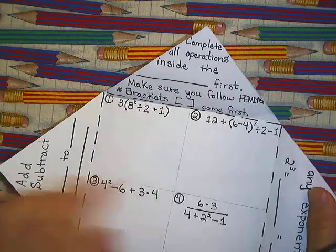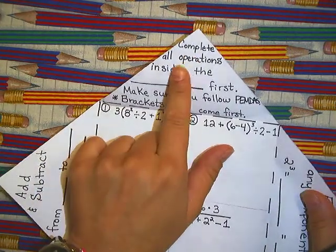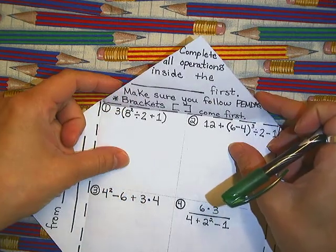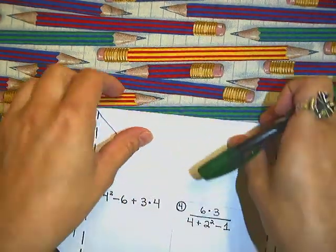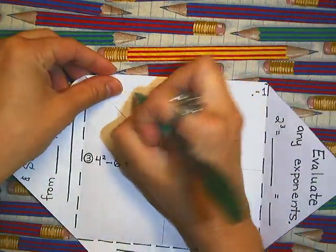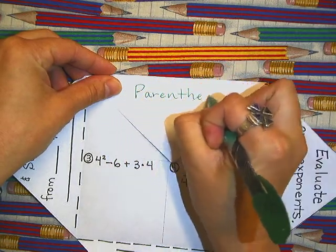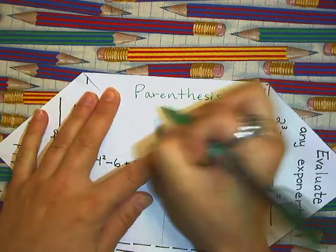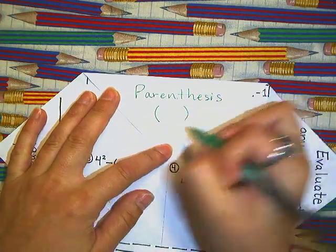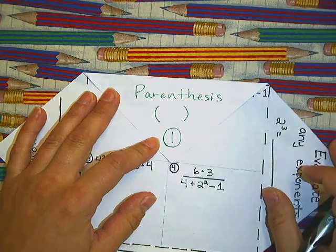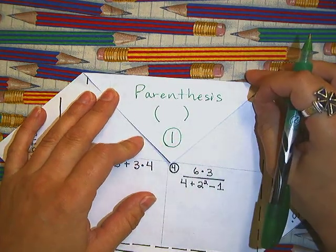We are going to start with the flap that says complete all operations inside the blank first. We are going to fold that flap down. On the back we are going to write parentheses. Then you will draw a visual. We are going to write number 1 here and circle it. This is going to be your first step in the order of operations.